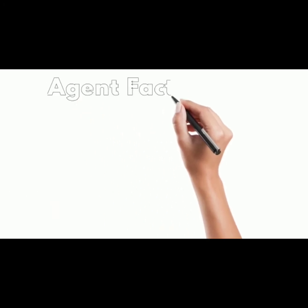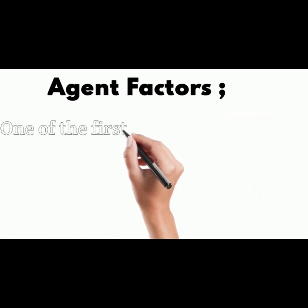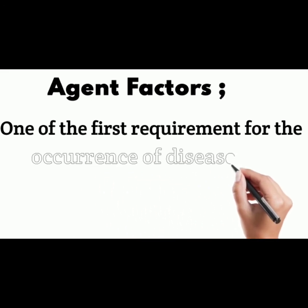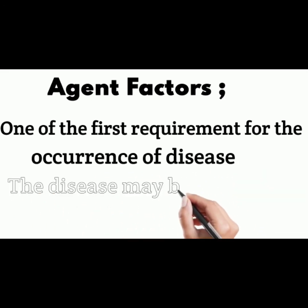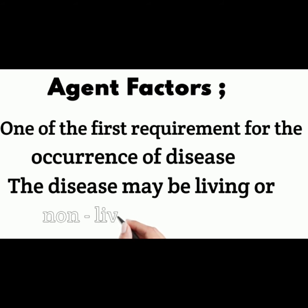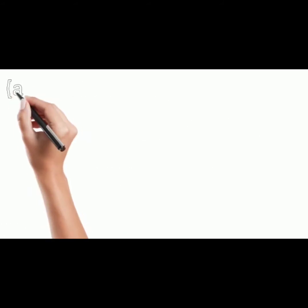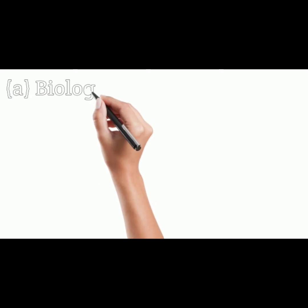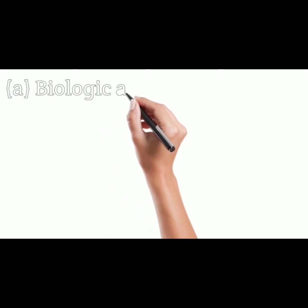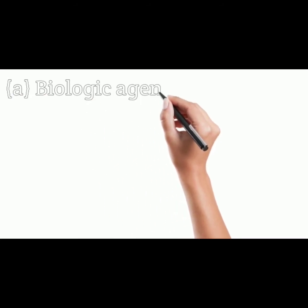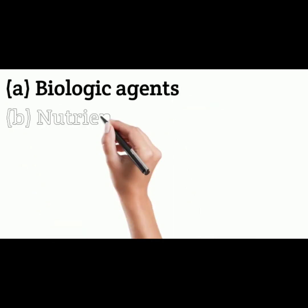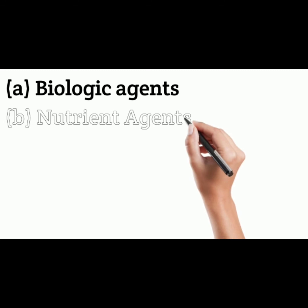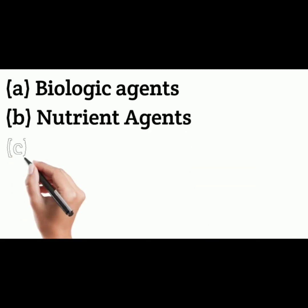Agent is one of the first requirements for the occurrence of disease. The disease agent may be living or non-living. The disease agents have been classified into five broad groups. First is biological agent, meaning the living agents — examples include viruses, bacteria, fungi, protozoa. Second is nutrient agent, which includes protein, fats, carbohydrates, vitamins and minerals.